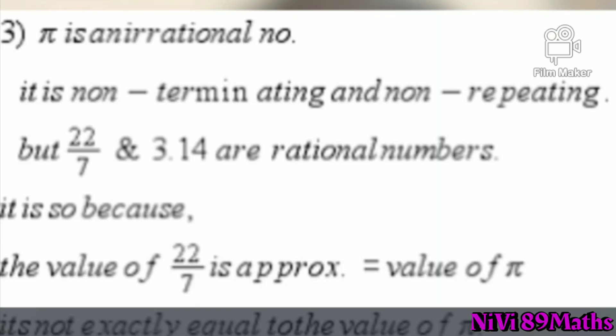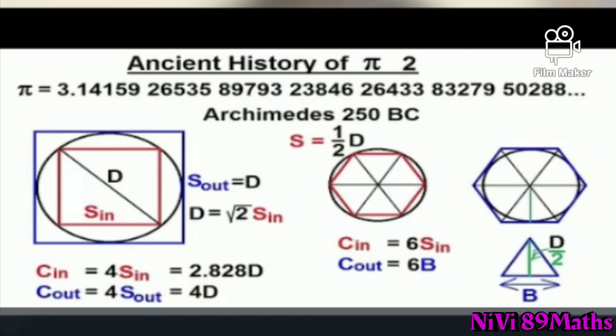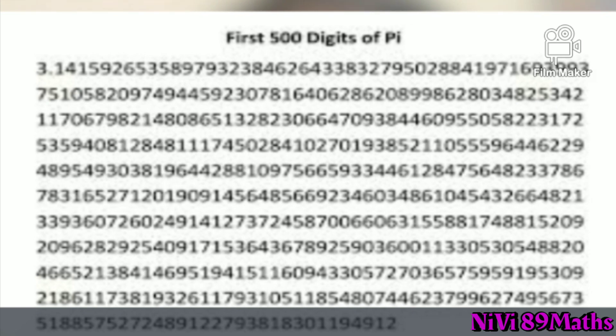An interesting fact about pi is that it is a non-terminating, non-repeating decimal — that is, it is an irrational number. The Babylonians made an early rough numerical approximation. Later, Greek mathematicians, particularly Archimedes, made improvements. By the start of the 20th century, 500 digits of pi had been calculated.